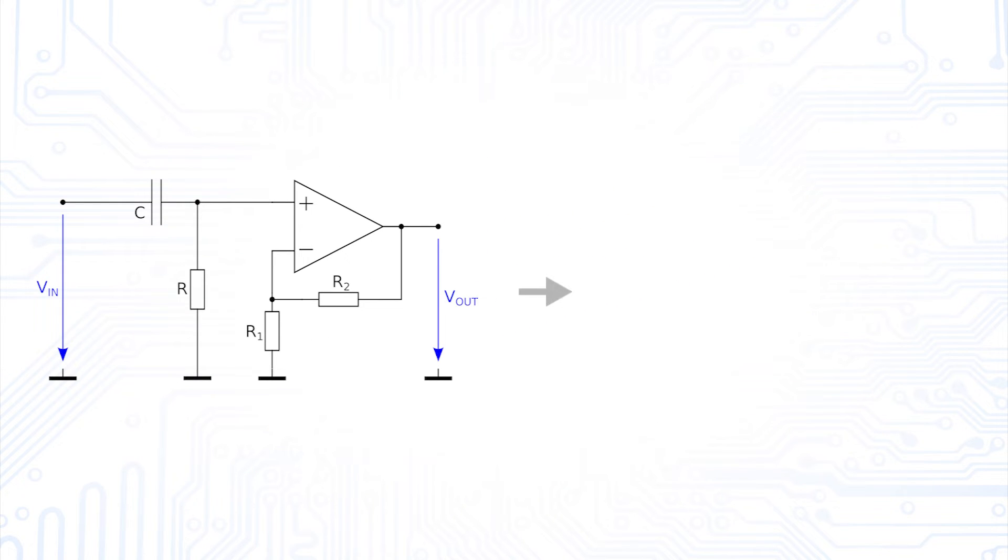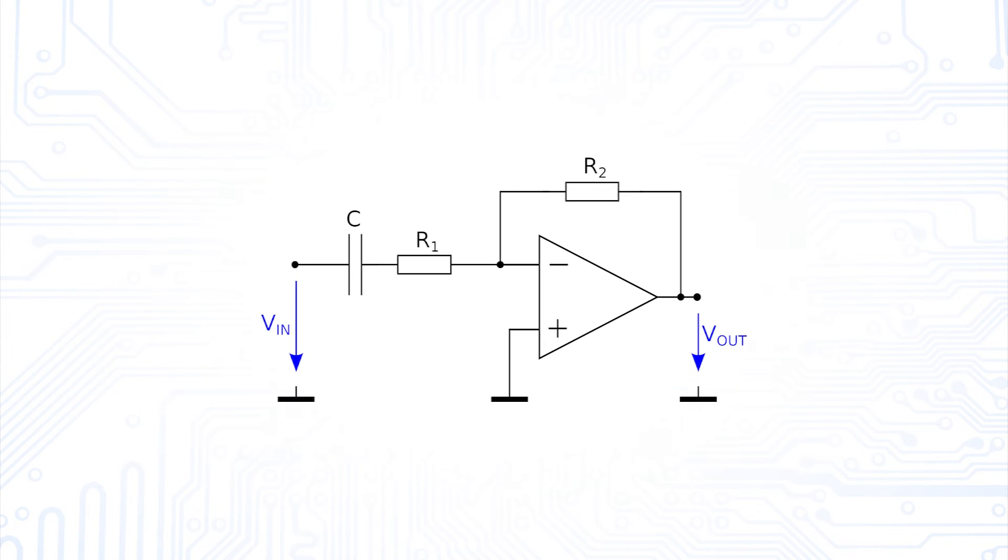Again, we can combine the RC element and the amplifier circuit by extending the inverting amplifier with a capacitor at the input.